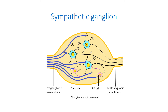Autonomic ganglia. Autonomic ganglia are divided into para- and prevertebral and terminal or intramural. Paravertebral ganglia are sympathetic ganglia lying along the length of the sympathetic trunk. Prevertebral or preaortic ganglia are sympathetic ganglia that lie between the paravertebral ganglia and the target organs.